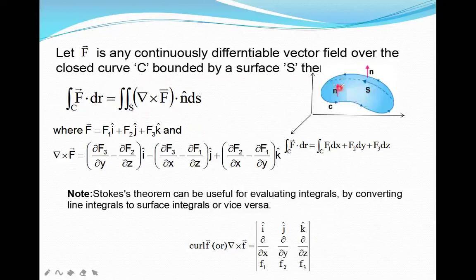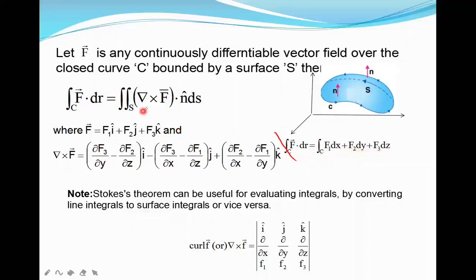Since f bar equals f1 i plus f2 j plus f3 k, we already know how to calculate this line integral. The integral of f bar dot dr over the curve C is defined as the integral of f1 dx plus f2 dy plus f3 dz over the curve C. Now, how do we calculate del cross f?